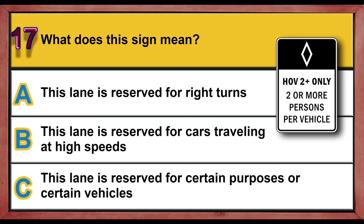Question 17. What does this sign mean? A. Acceleration road ahead. B. Assigned road ahead. C. This lane is reserved for cars travelling at high speeds.